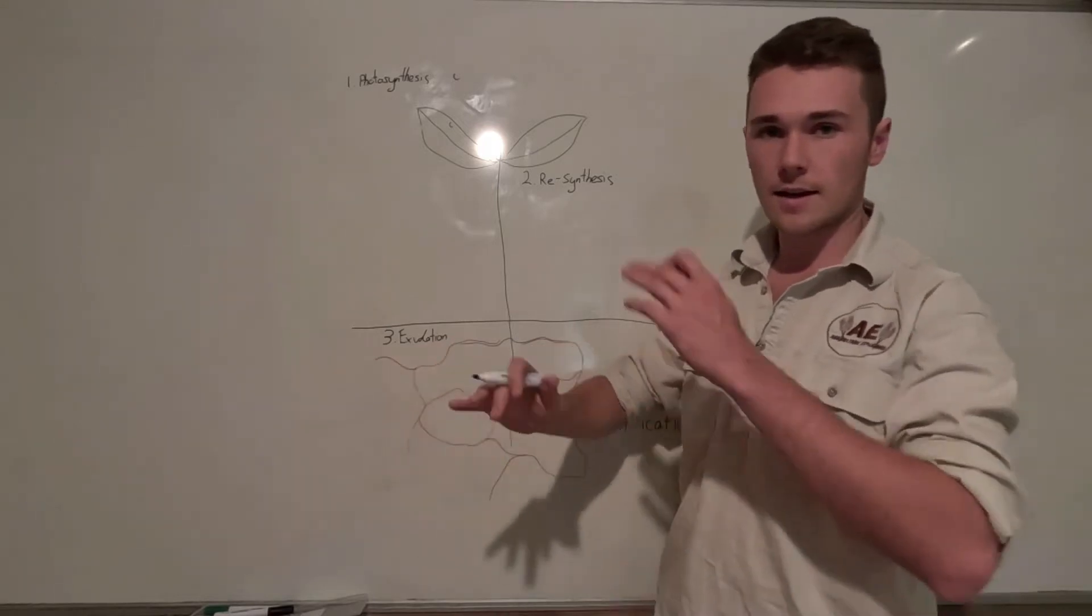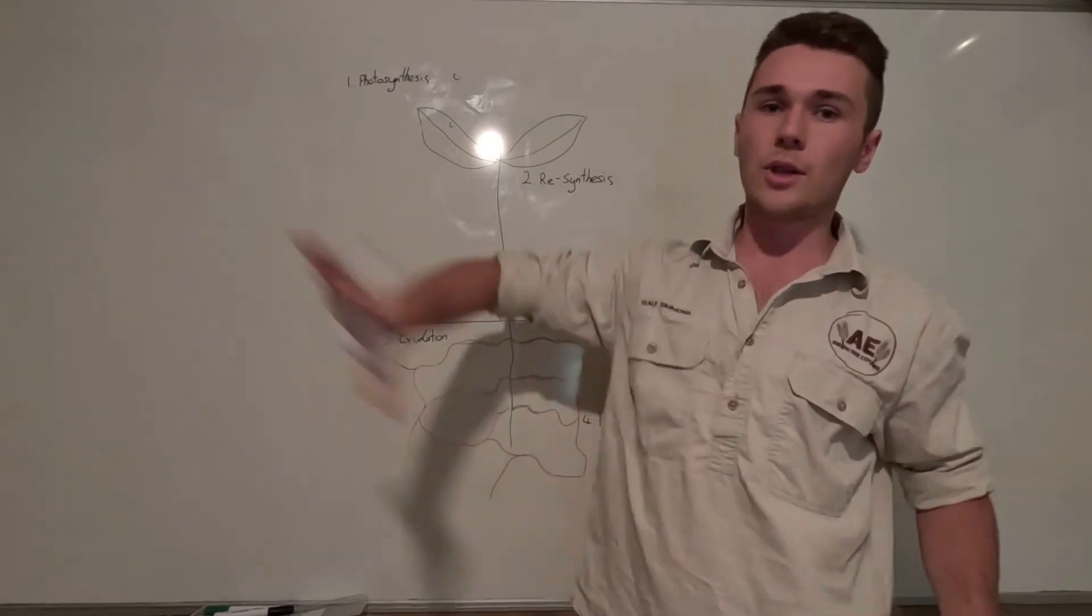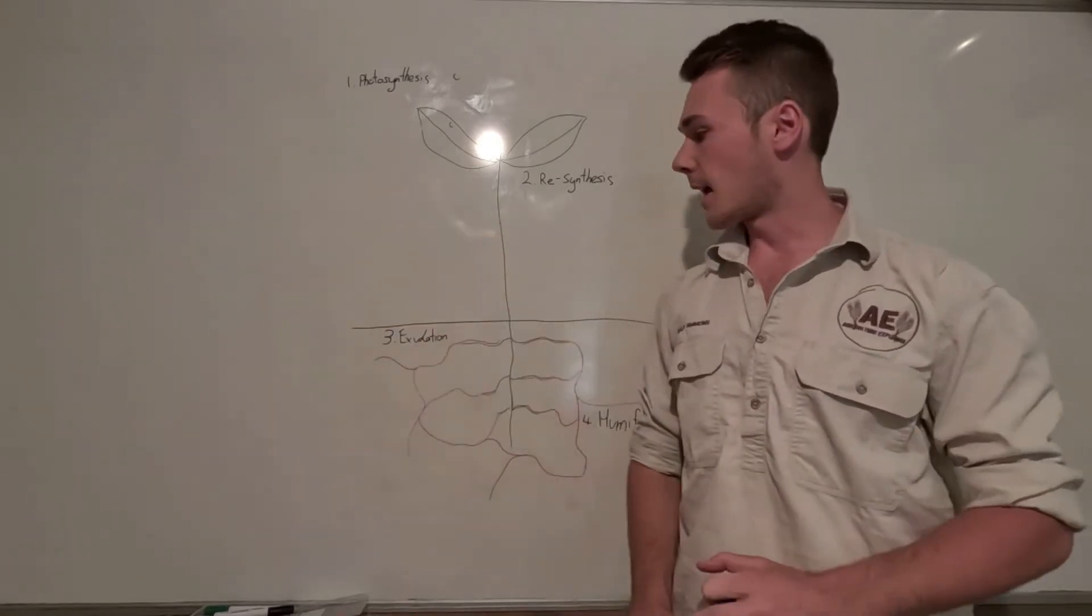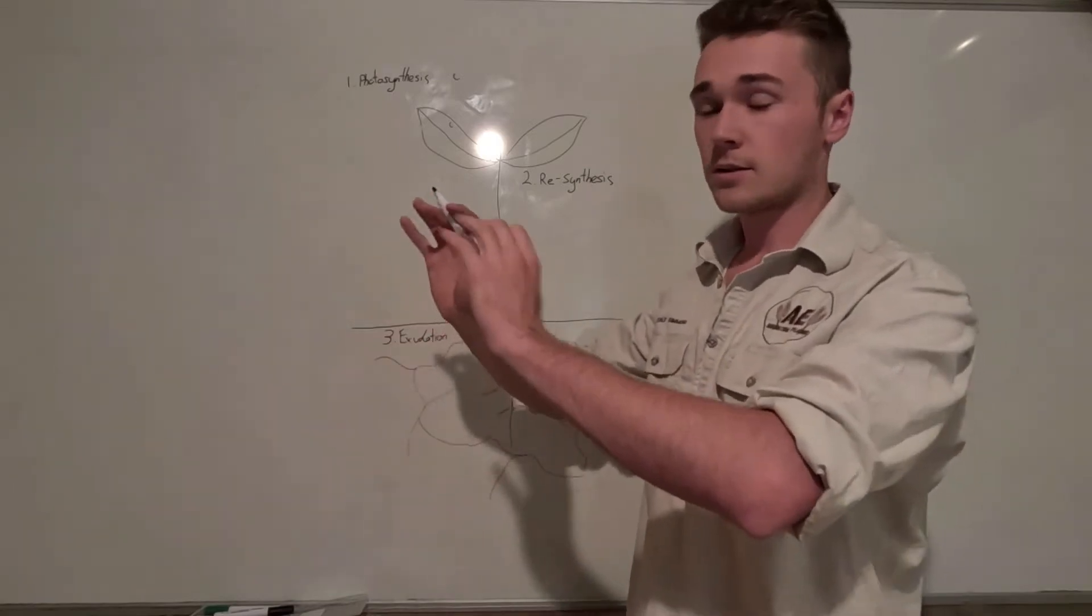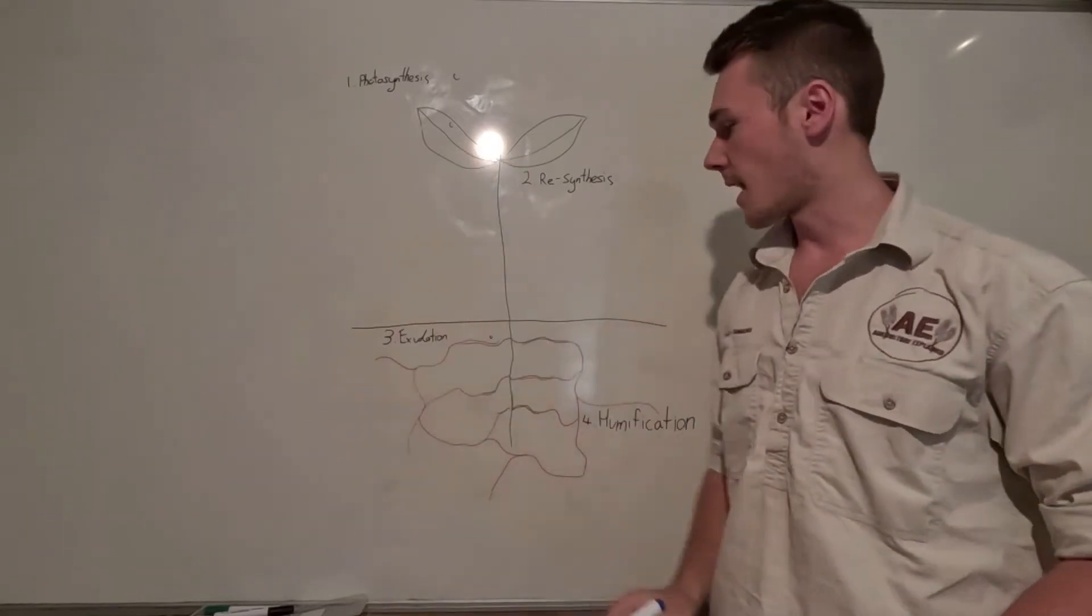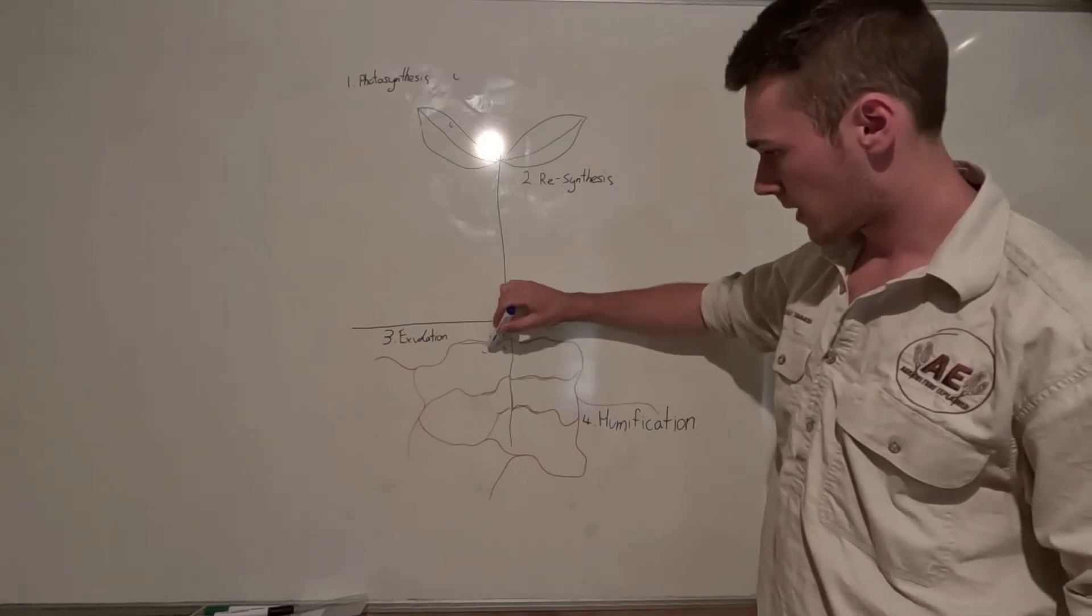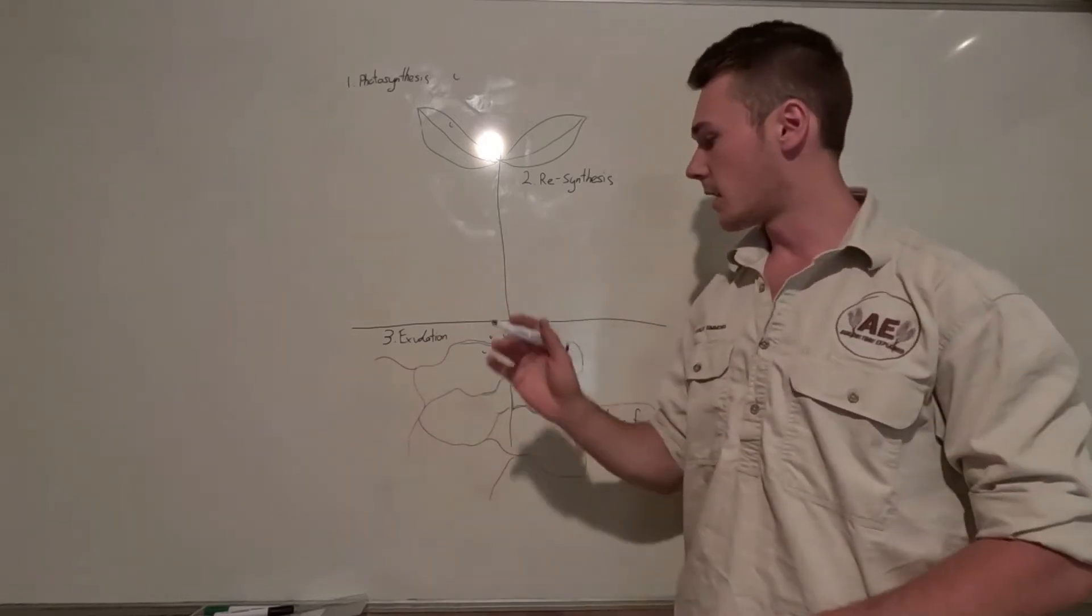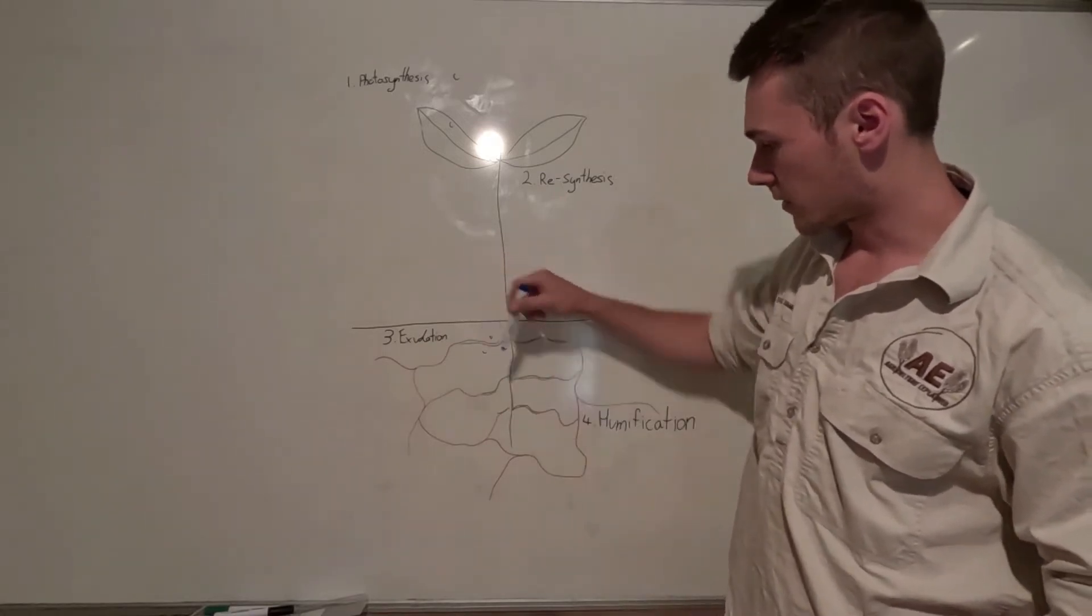We go into our next stage, exudation. This is where the plants push out these carbon compounds and there's a range of what they are. That carbon is pushed out to the soil for the next stage and for the microorganisms. Now we've got a bunch of carbon surrounding our roots in the rhizosphere, which is that area just right next to the roots.